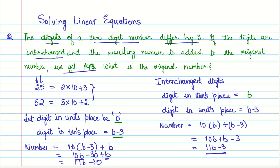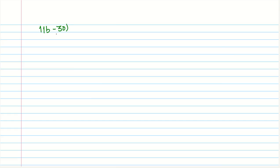We are given that when we add these two numbers together, we get 143. So adding the original number (11B minus 30) and the interchanged number (11B minus 3) equals 143. This gives us our equation.